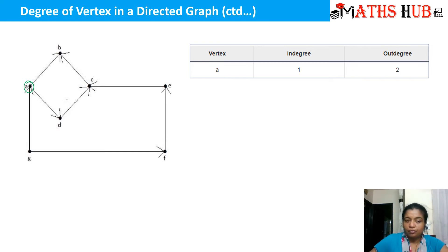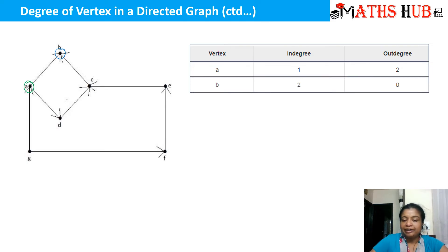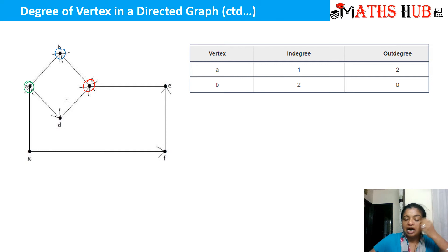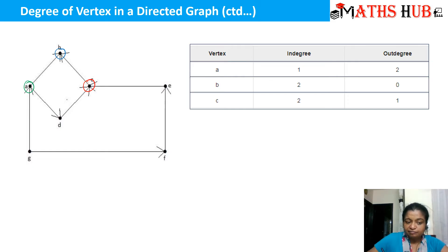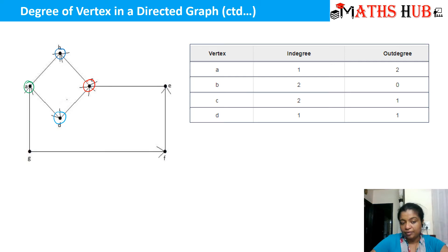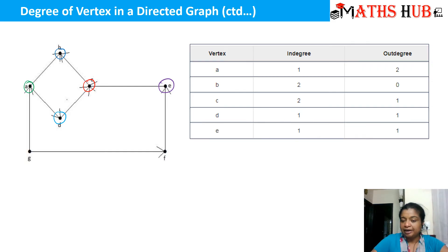For vertex C, two edges are moving inside so in-degree is 2, and one edge is moving out so out-degree is 1. For vertex D, one edge goes inside and one moves outside, so in-degree is 1 and out-degree is 1. For vertex E, one is moving inside and one is moving outside, so in-degree and out-degree are both 1.